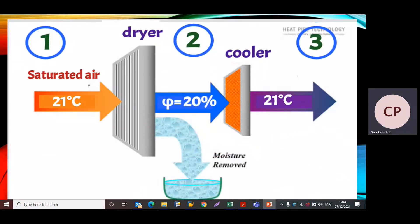Let us first understand the given data with the help of a diagram. The saturated air is passed through a dryer. The condition of air entering the dryer we will use suffix 1, and the temperature td1 is equal to 21°C. The dryer uses silica gel absorbent, so the drying process is a chemical dehumidification process, which means this process is adiabatic.